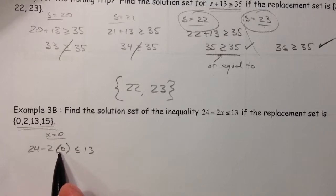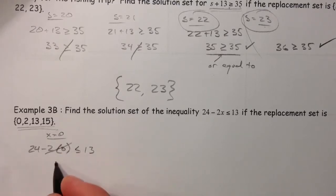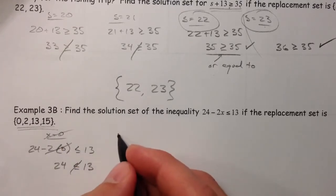Is that less than or equal to 13? Well, 2 times 0 is 0. And even if it's negative, so I'm just going to write, that's all the way gone. 24 minus 0. 24 less than or equal to 13? No, it is not. So, that is not working.